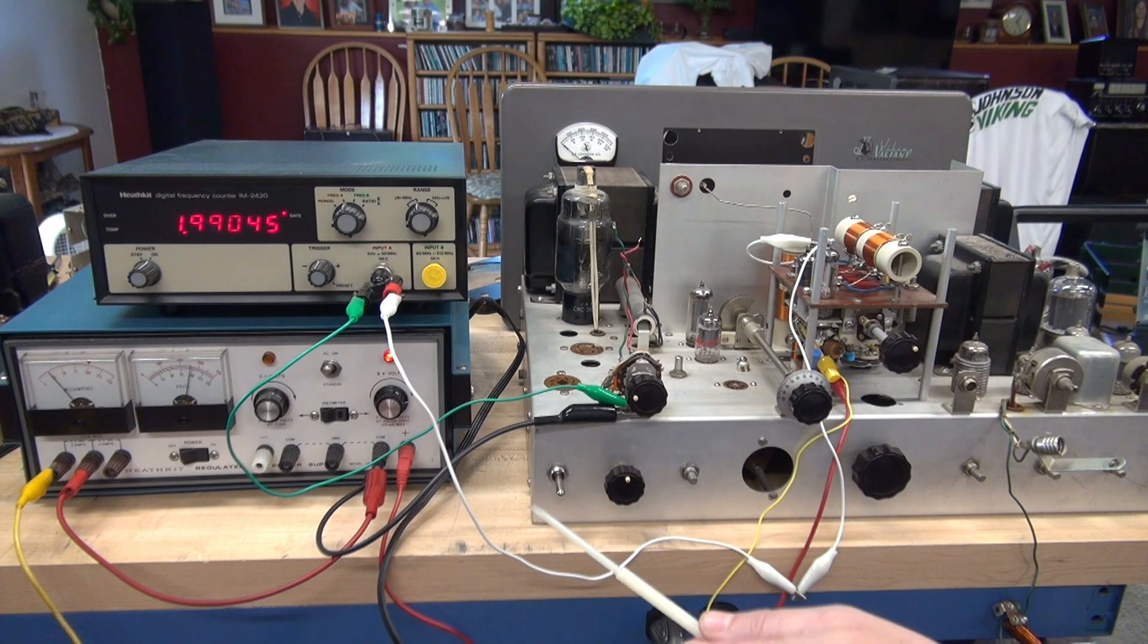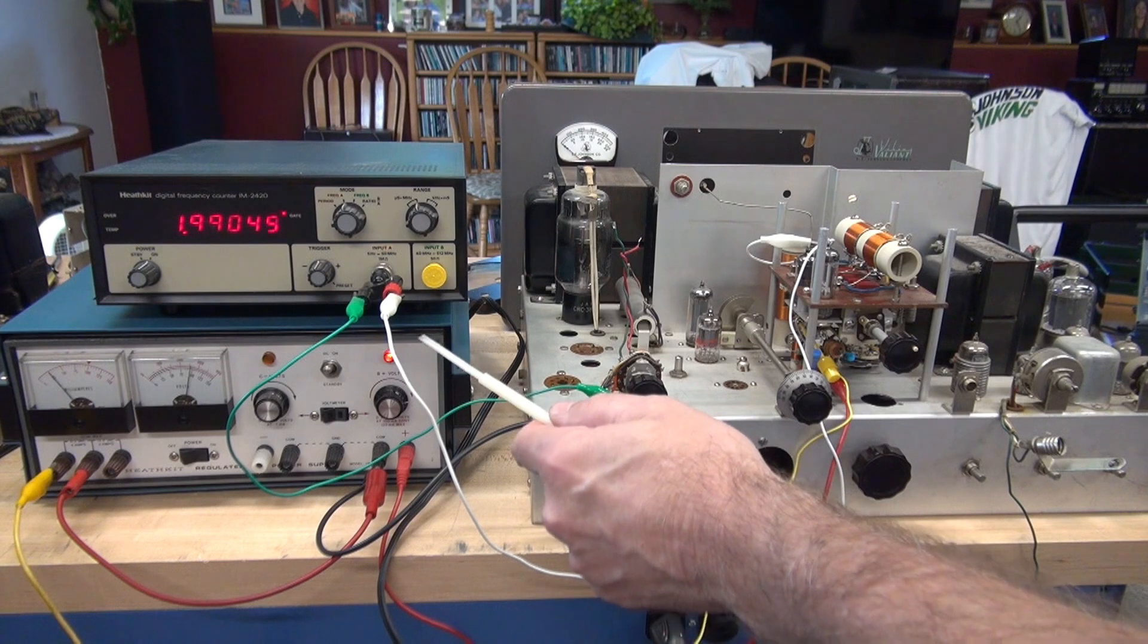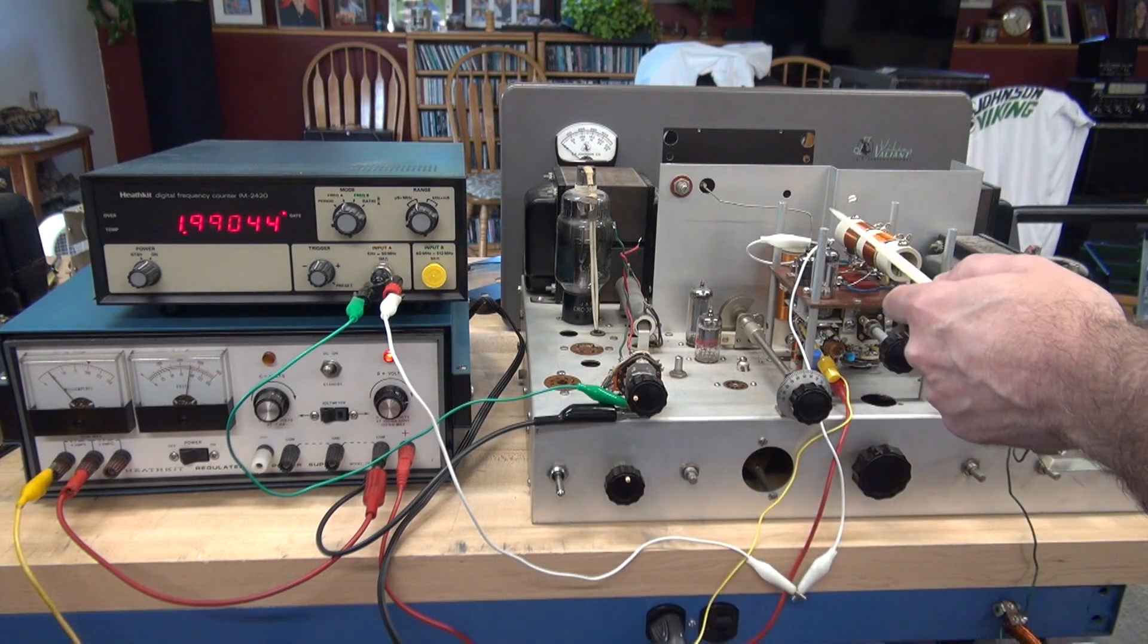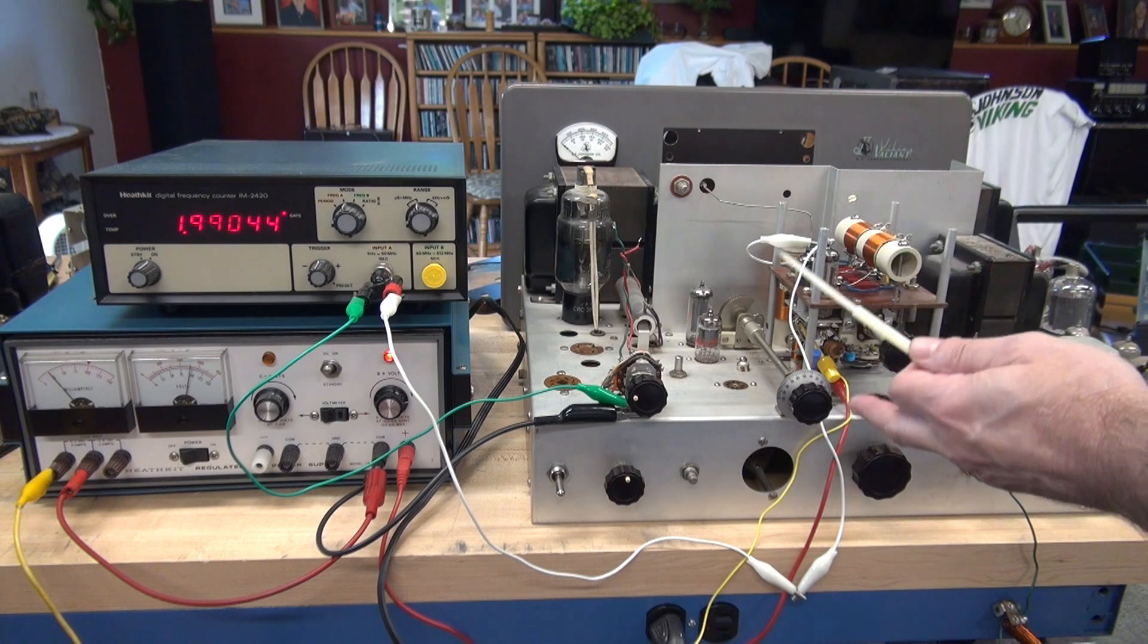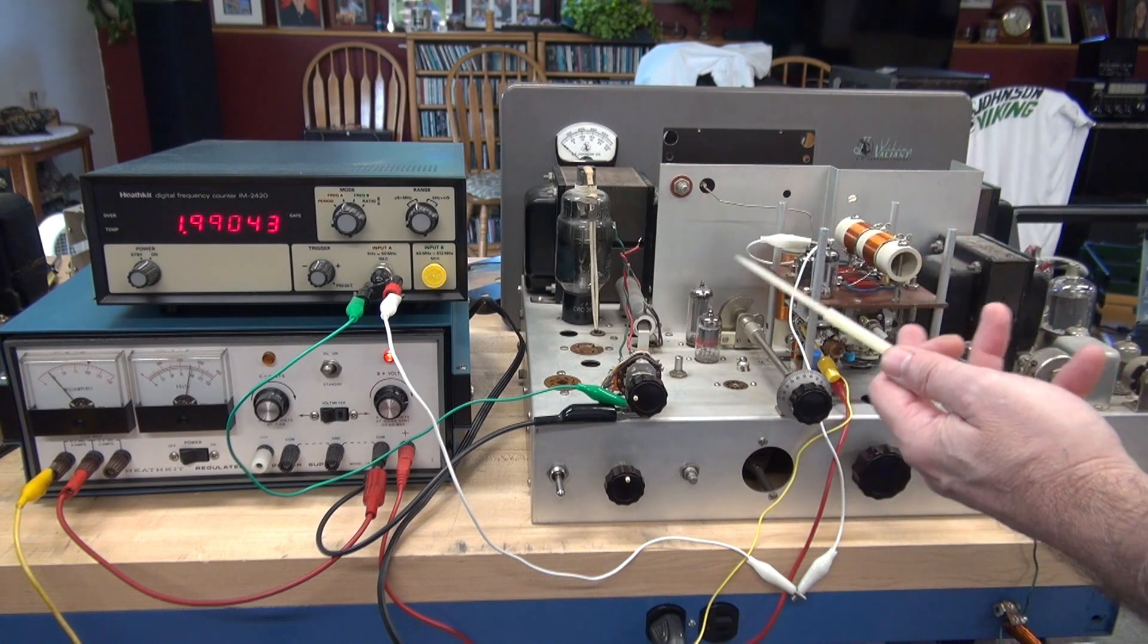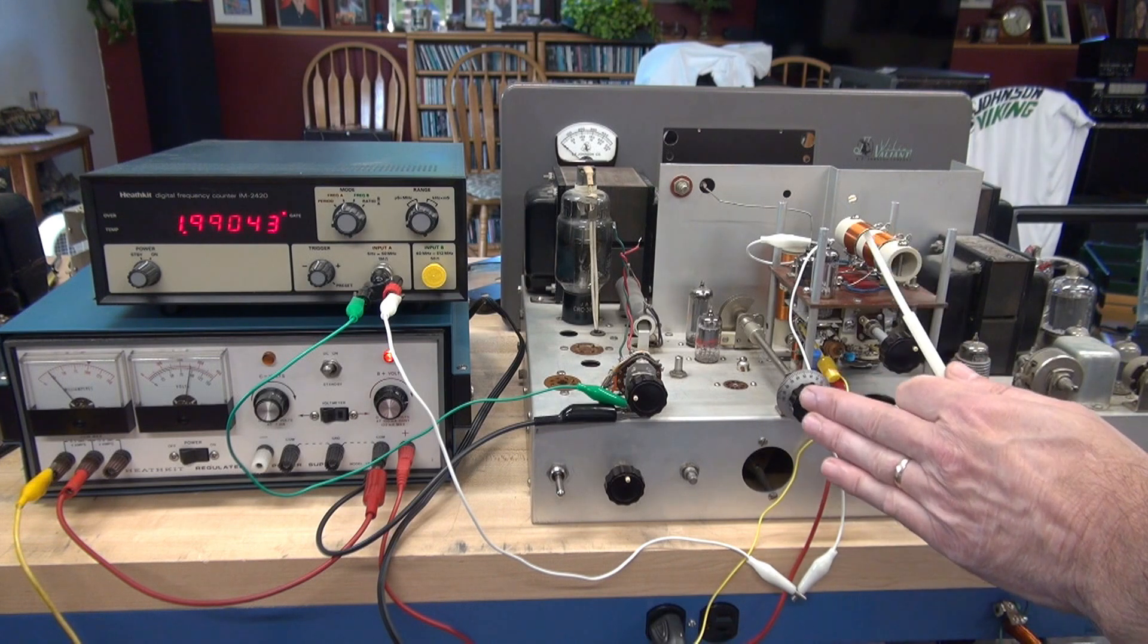Next, you're going to connect your frequency counter. Low side is going to go to chassis. And the high side, you're just going to use a jumper wire and make a loop around the 6AU6 so that it can induce the frequency. You don't want to connect it directly because it will shut down the VFO.